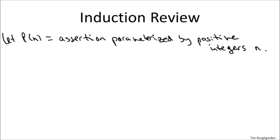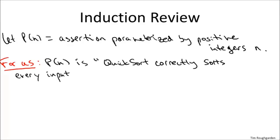I know this is a little abstract, so let me just be concrete about the assertion we actually care about for QuickSort. For us, the assertion P(n) is the statement that QuickSort is always correct on inputs of length n, arrays that have n elements.